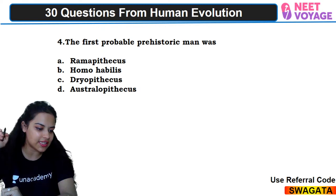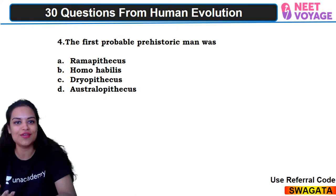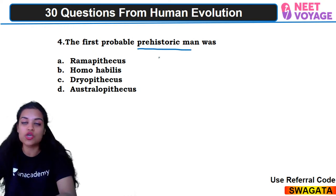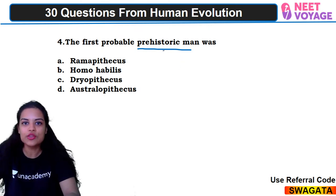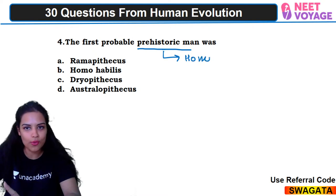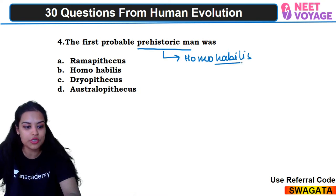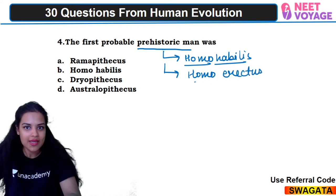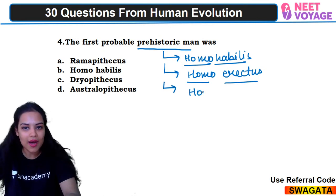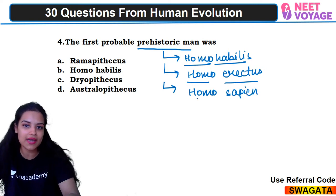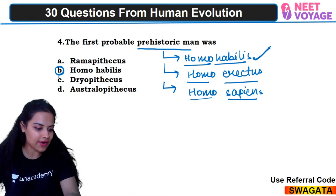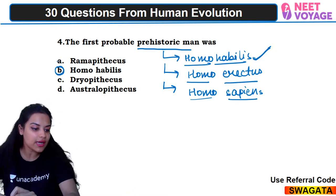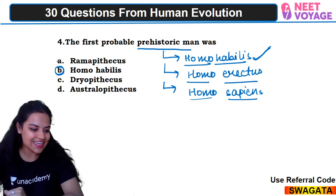Fourth question: the first probable prehistoric man. We divide them into ape man and prehistoric man. Prehistoric man came in this order: first was homo habilis — the handyman — then homo habilis gave rise to homo erectus, and the third and last prehistoric man is homo sapiens. So B would be the right answer. Ram Prasad has answered correctly.